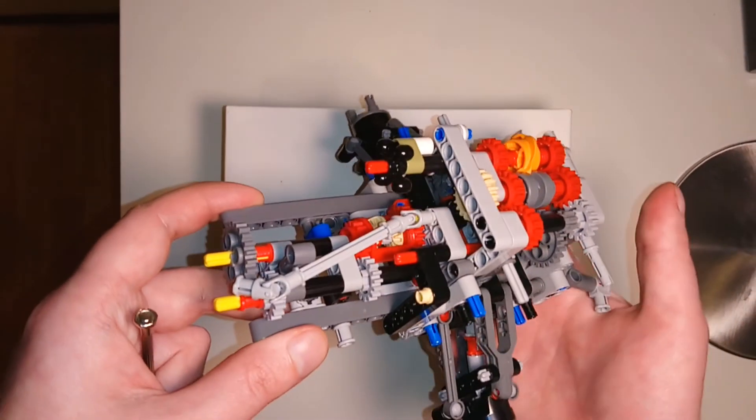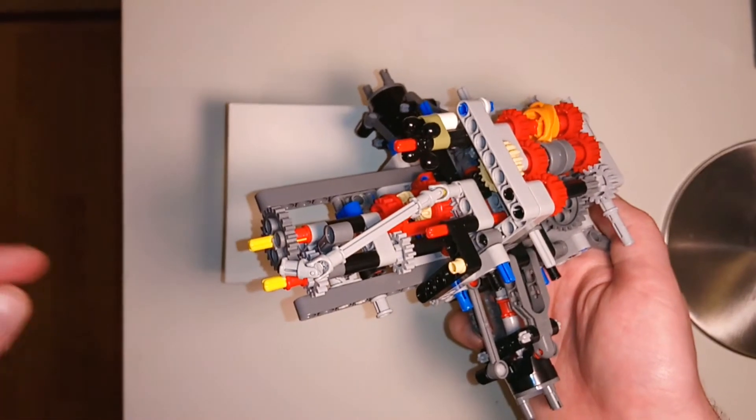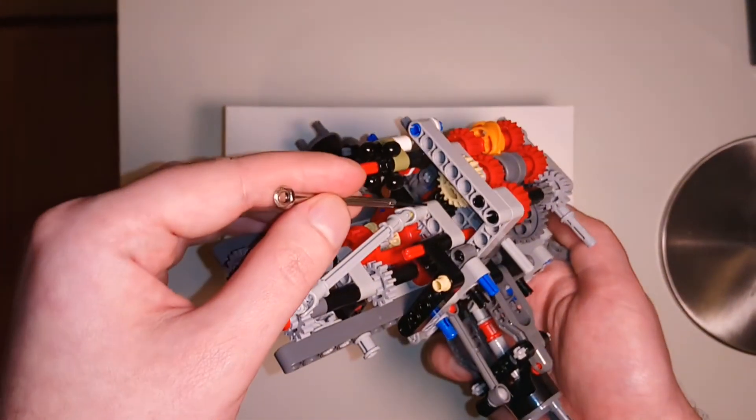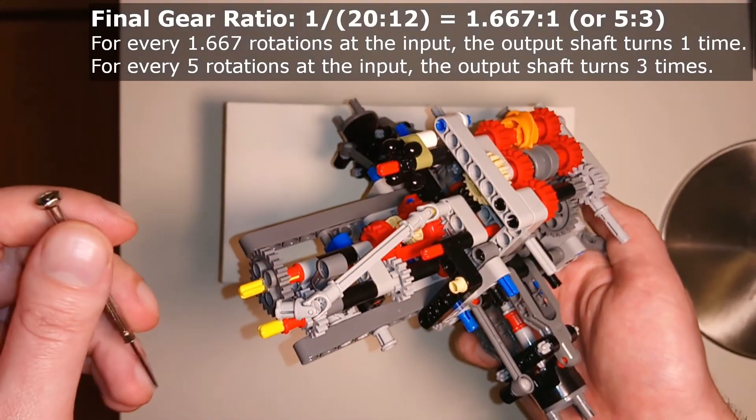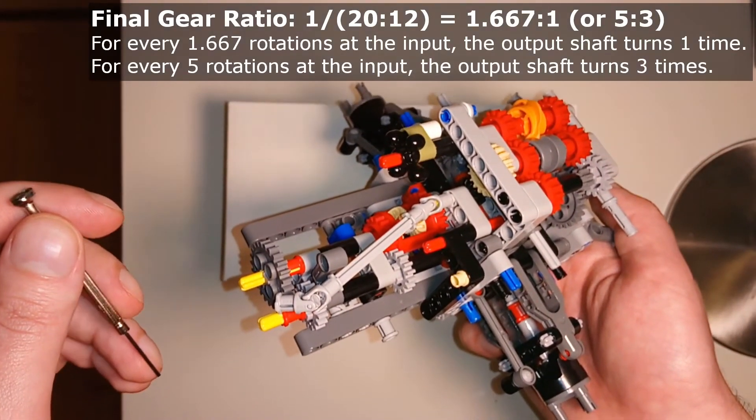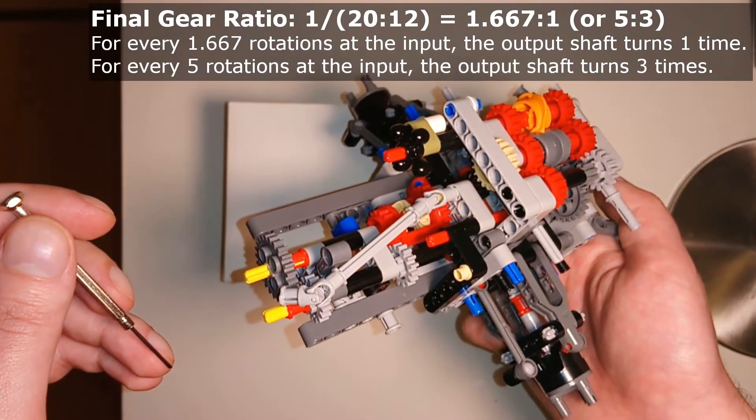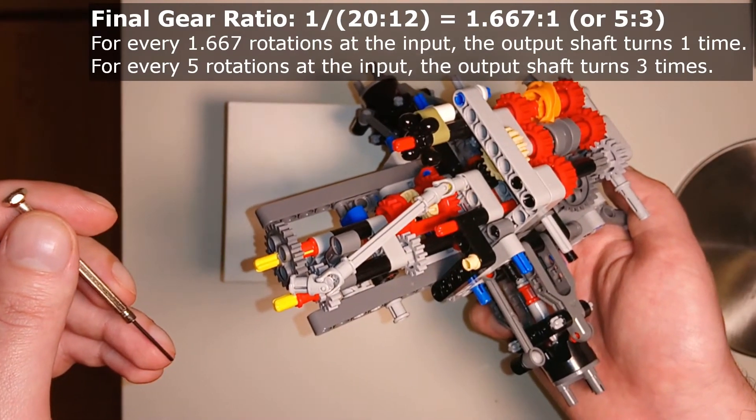In third gear, the rotational input also only goes through one transition from a smaller to a larger gear wheel, namely here. But compared to second gear, the ratio between the wheels is smaller, so the torque is decreased while the rotations are increased.